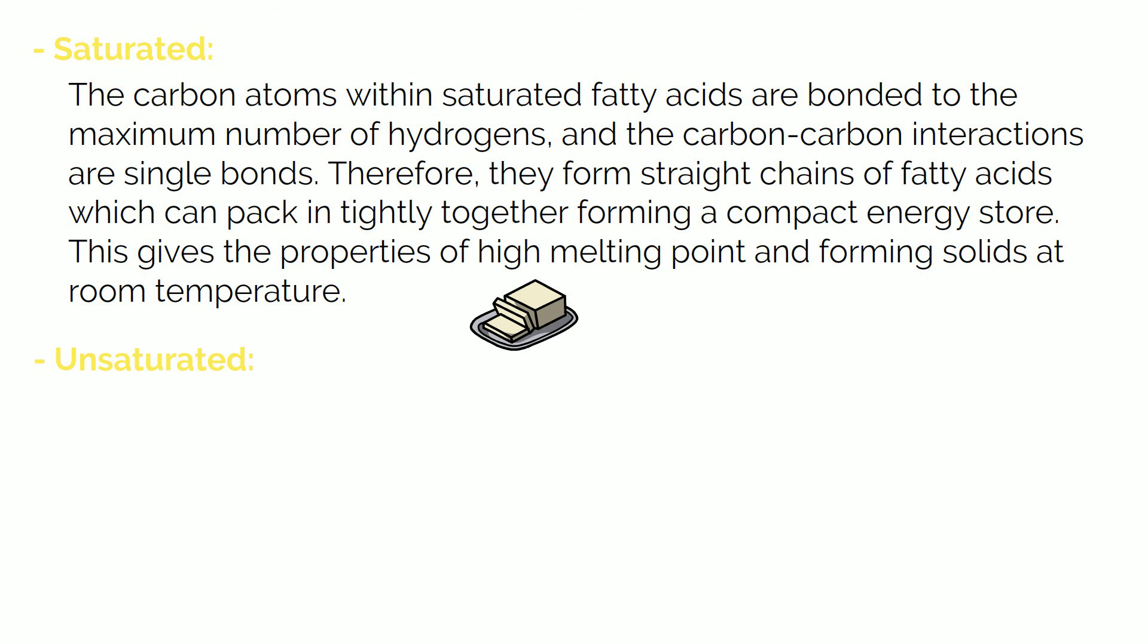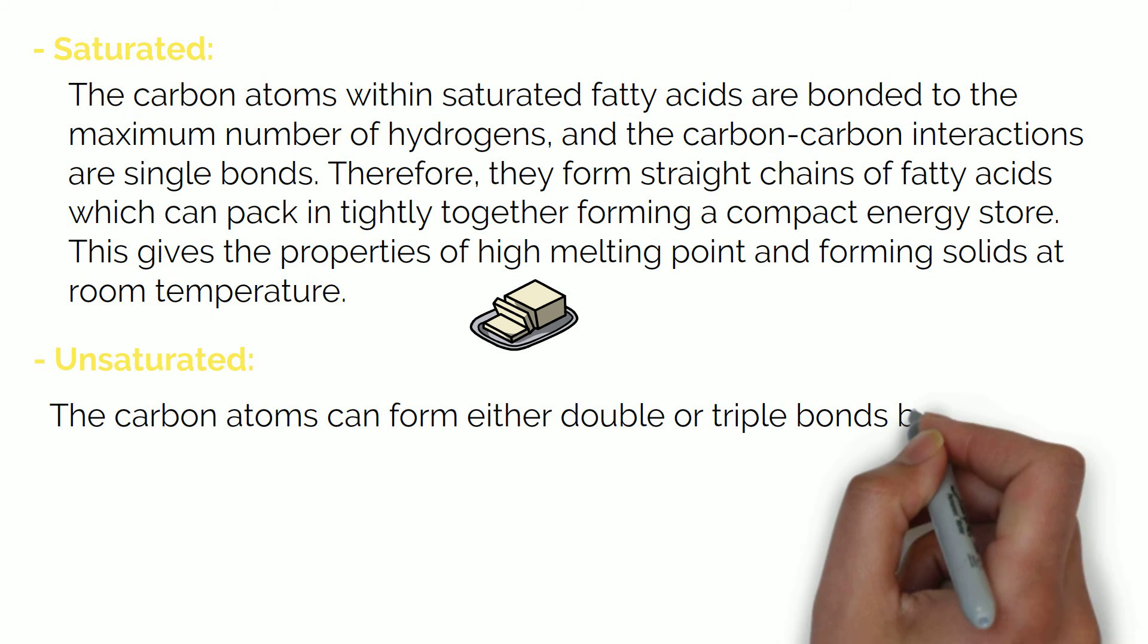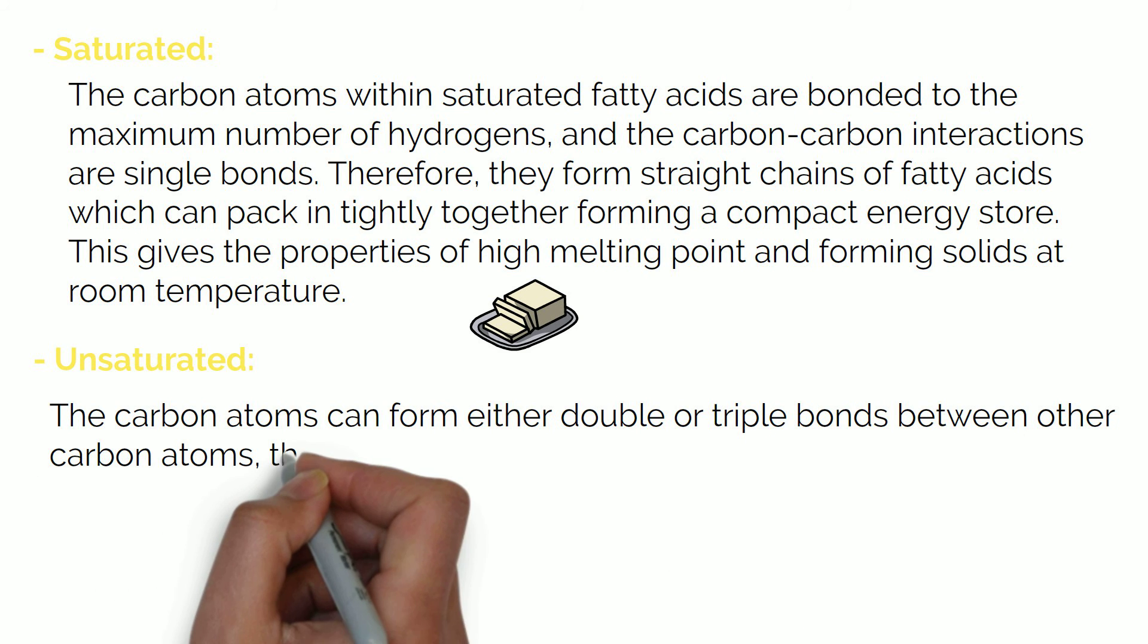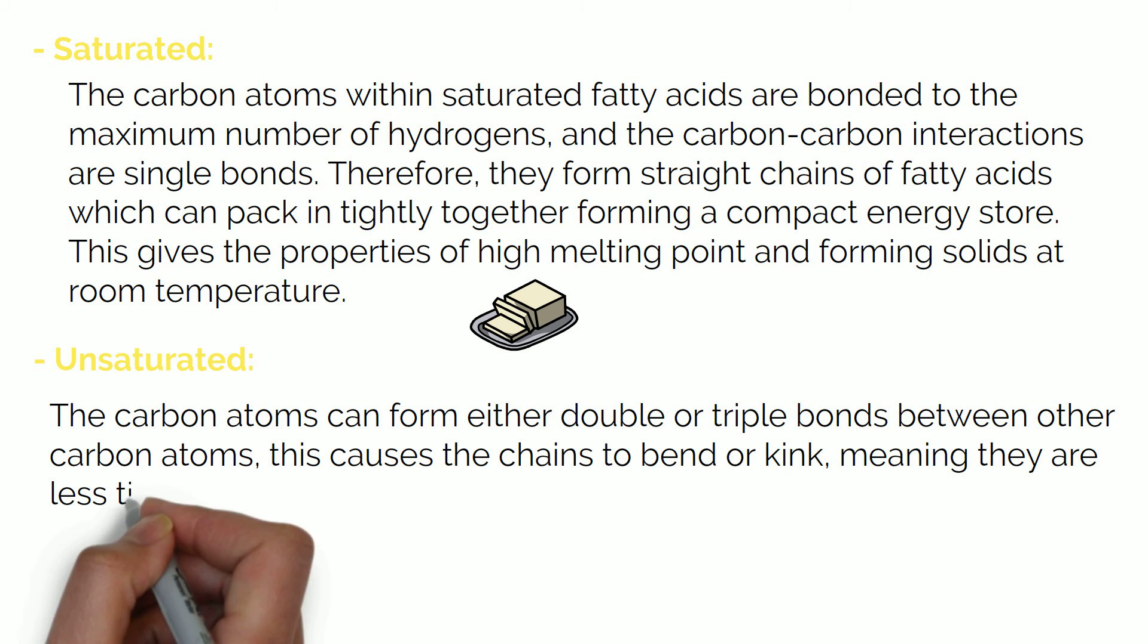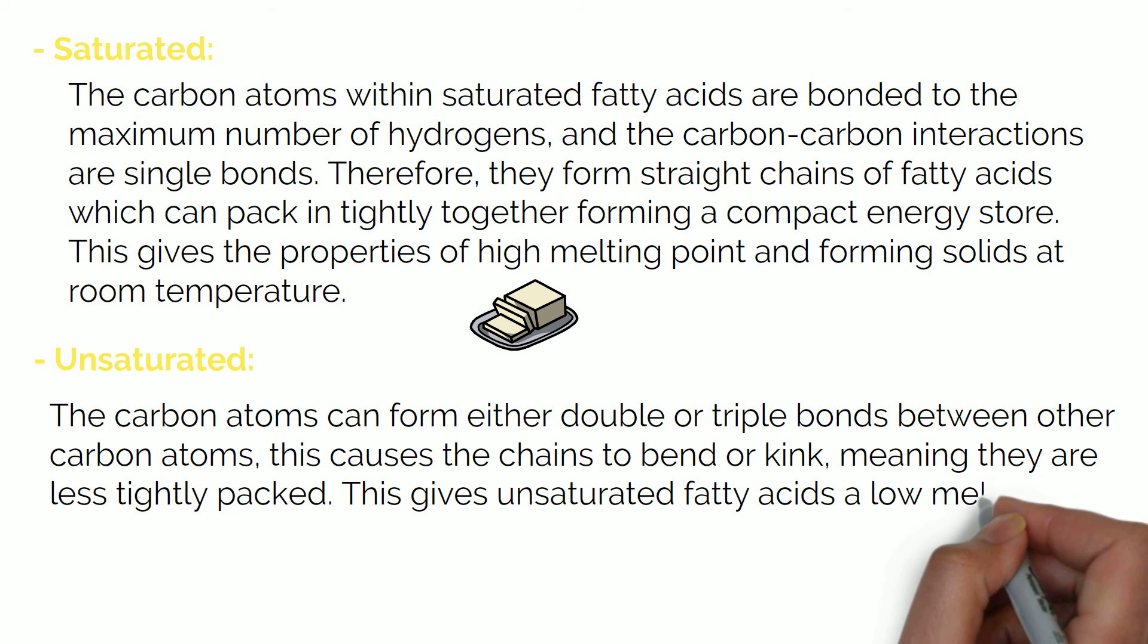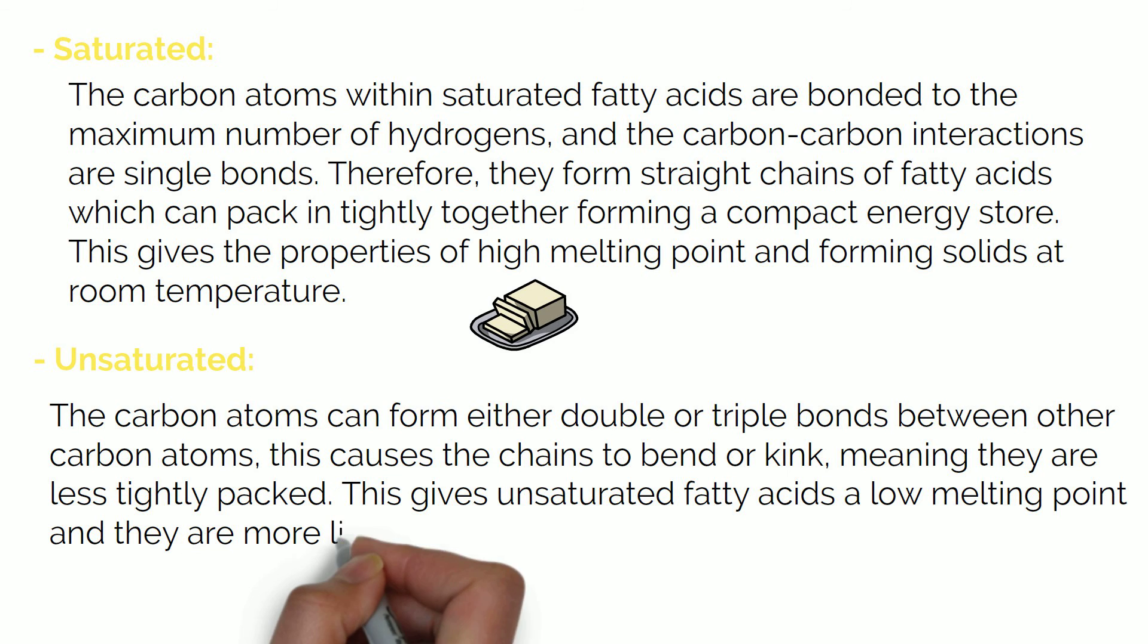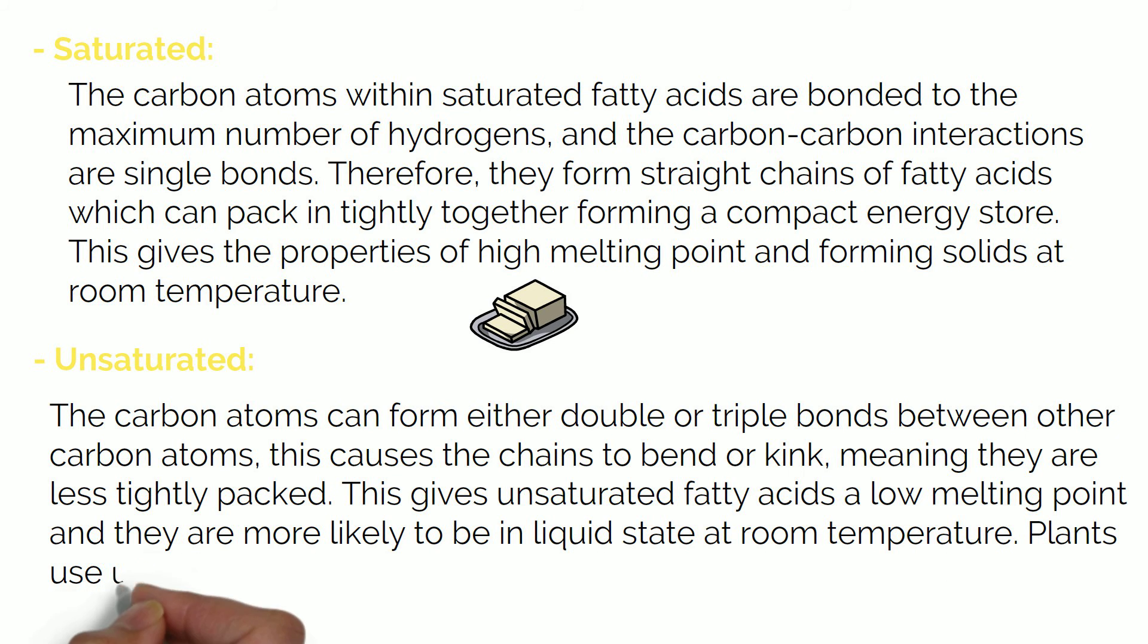Unsaturated fatty acids are when carbon atoms within the fatty acids can form either double or triple bonds between other carbon atoms. This causes the chains to bend or kink meaning they are less tightly packed. This gives unsaturated fatty acids a low melting point and they are more likely to be in liquid state at room temperature. Plants use unsaturated fatty acids as their energy store.